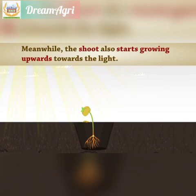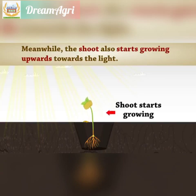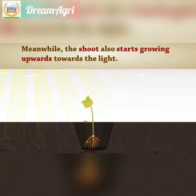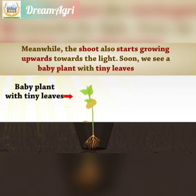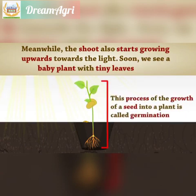Meanwhile, the shoot also starts growing upwards towards the light. Soon, we see a baby plant with tiny leaves. This process of the growth of a seed into a plant is called germination.